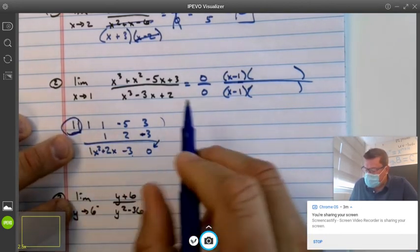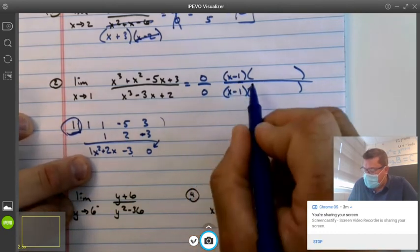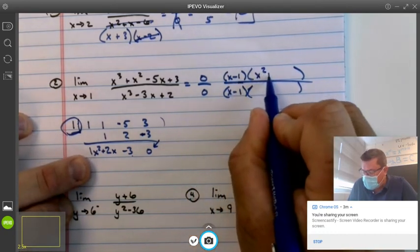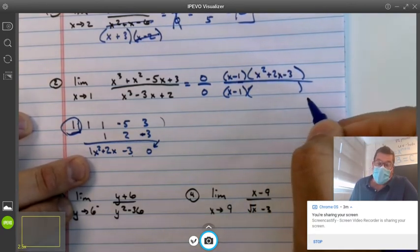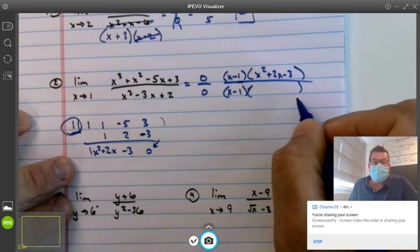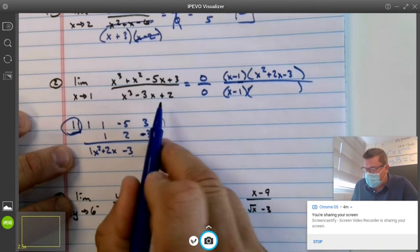The factor that caused 1 to work is x minus 1, and here is the other factor. It may be further factorable, and we may have to do that, but let's try and see how the bottom factors.